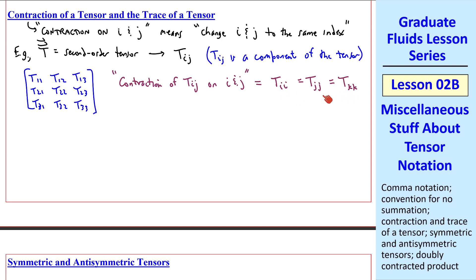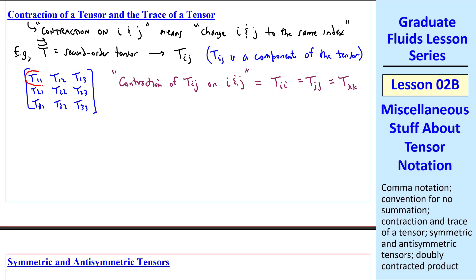These are all equivalent, since these indices are dummy indices, or repeated indices. Regardless of the repeated index we choose, we're simply then summing the diagonal components, t11 plus t22 plus t33.